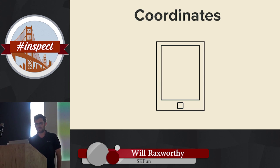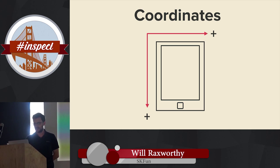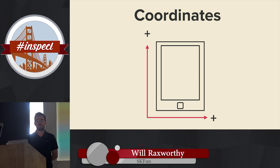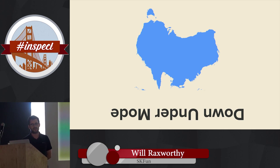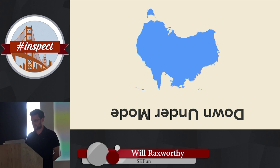Lesson number one: the coordinate system. In a typical iOS app, the coordinate system looks a certain way. In SpriteKit, that's flipped — what I like to call 'down under mode.' You'll figure that out pretty quickly. It's actually easier for us who live in Australia.